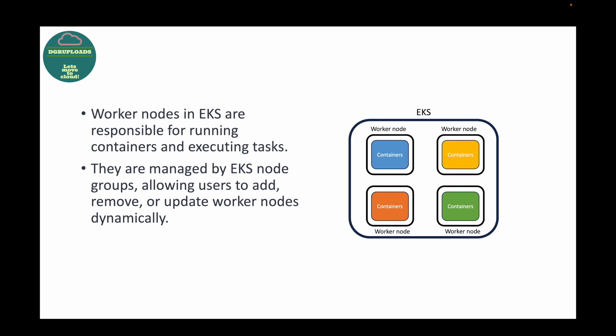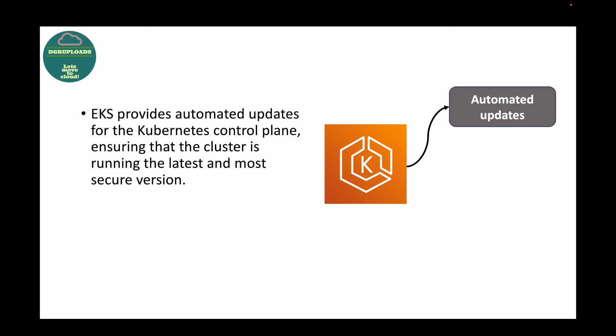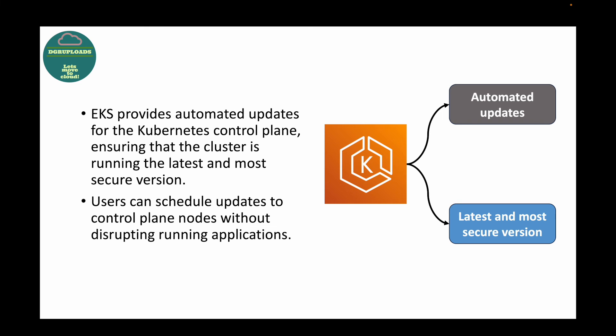The next question is: how does EKS handle updates and patches for the Kubernetes control plane? EKS provides automated updates for the Kubernetes control plane. Whenever a newer version of Kubernetes is available, AWS provides that update, ensuring the cluster always runs on the latest and most secure version. AWS recommends moving to newer versions when released, and at a certain point will enforce the upgrade. Users can also schedule these updates without disrupting running applications.